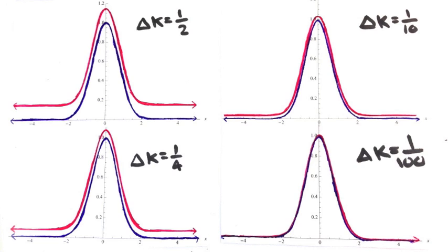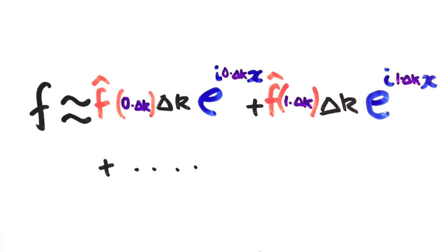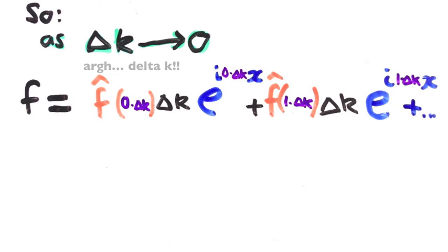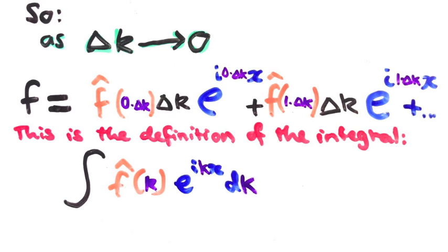If we wanted to summarize what we just did in equation form, we'd write it like this. Furthermore, the smaller we make Δx, the better the approximation. So we'd say that f equals the limit as Δx goes to zero of all that stuff on the right hand side. This by definition is the integral of f̂ times e to the ikx dx.